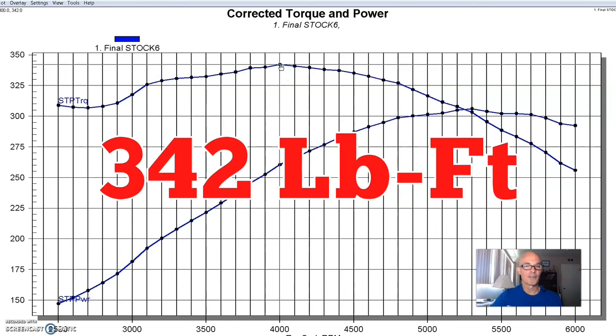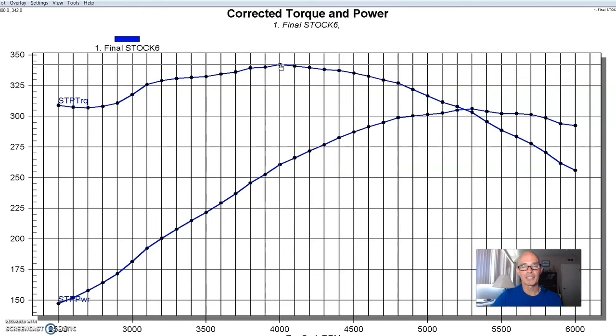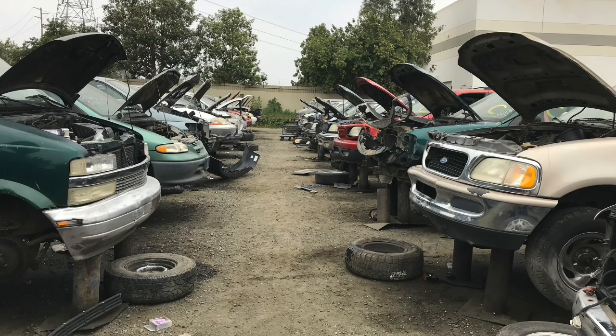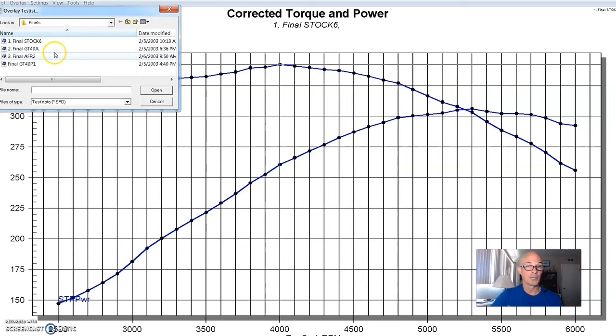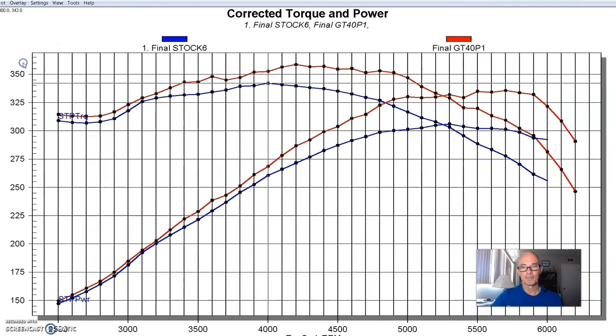Equipped with our stock E7 TE heads, the only thing we did on this head was upgrade the valve springs. And as we'll see, that's a very important option. So equipped as such, our 306 inch small block Ford produced 306 horsepower - right at one horsepower per cubic inch, the magic number. 306 horsepower and 342 foot-pounds of torque with the stock head.